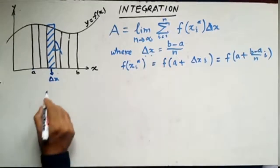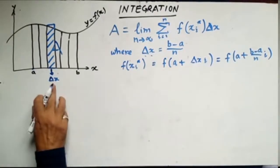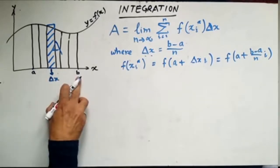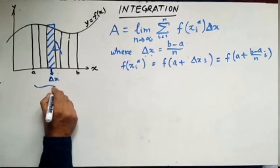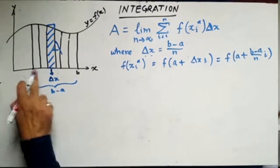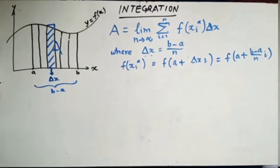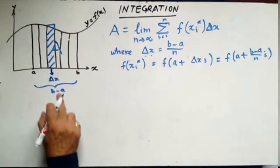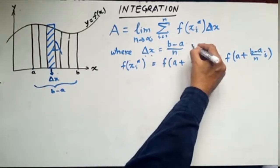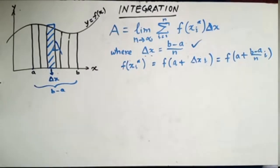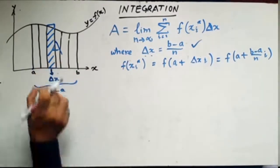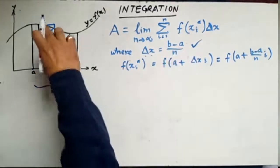What is the value of delta x? Since this is one part and we are dividing from a to b, this distance is equal to b minus a. Since we have divided this curve into n parts, delta x is equal to b minus a by n. So the width of one rectangle is delta x, which is b minus a divided by n.